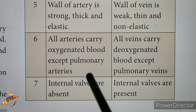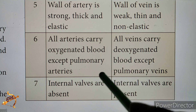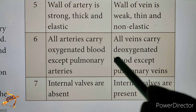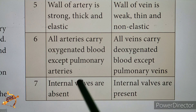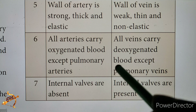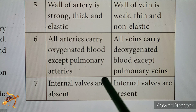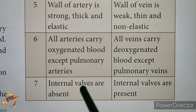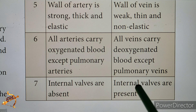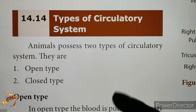Internal valves are absent in arteries — the blood flow is controlled without valves. In veins, valves are present. That is the type of circulatory system.